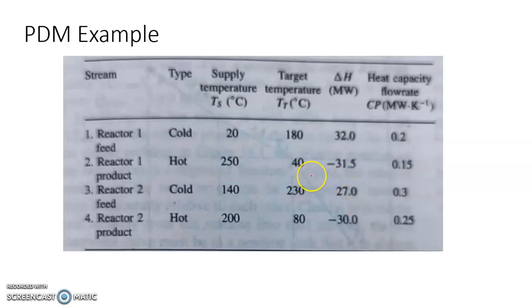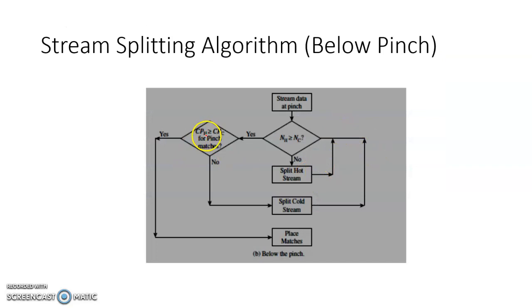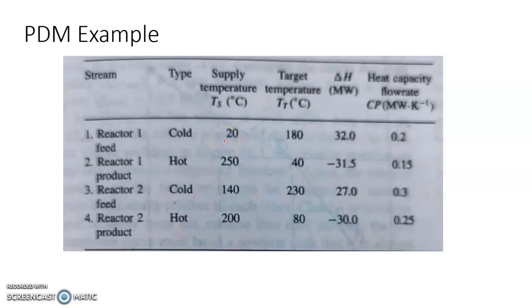To design a heat exchanger network: above pinch, the number of hot streams must be less than or equal to cold streams, and at the pinch point CP of the hot stream must be less than CP of the cold stream. Below pinch, the number of hot streams must be greater than or equal to cold streams, and the CP of the hot stream must be greater than that of the cold stream at the pinch point.